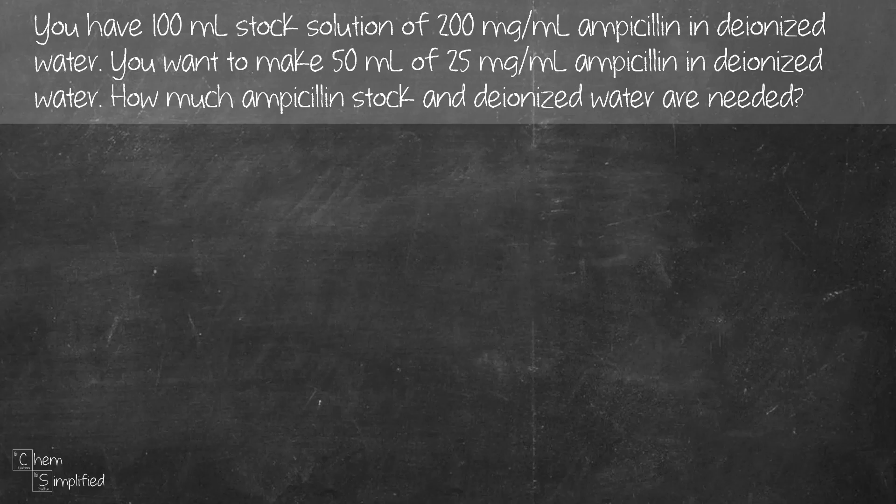Let's start with identifying what are the given information. We have a lot of numbers here. Let's go with the first one: 100 ml and 200 mg per ml. These two things are for the same stuff which is the stock solution, which is basically our ampicillin in deionized water.